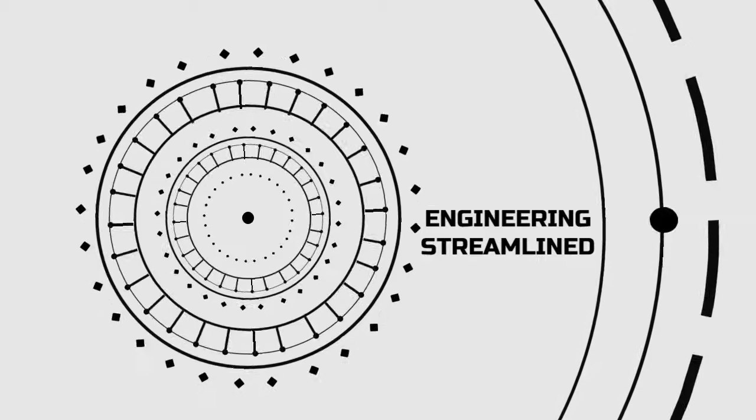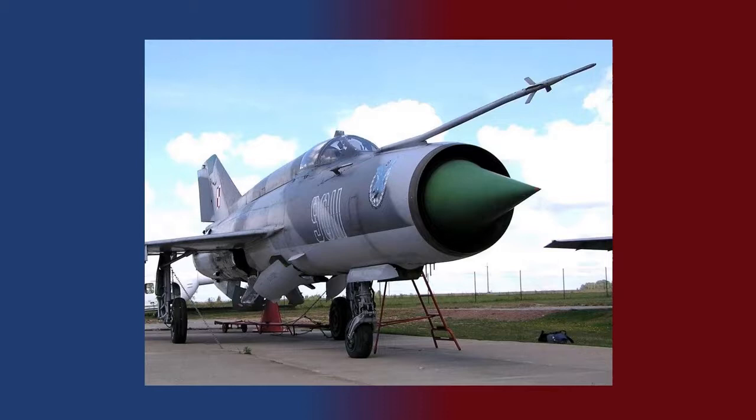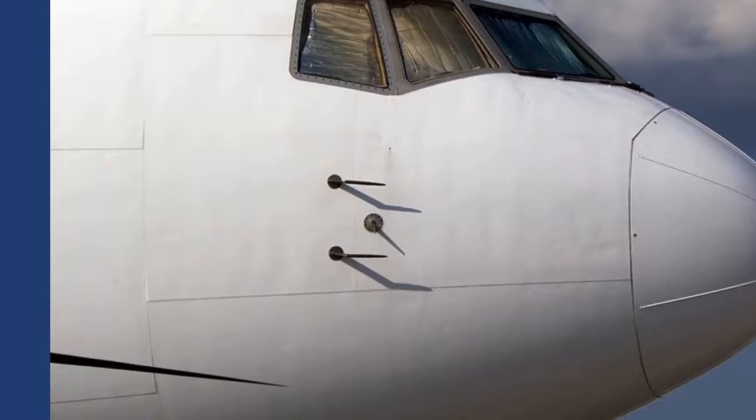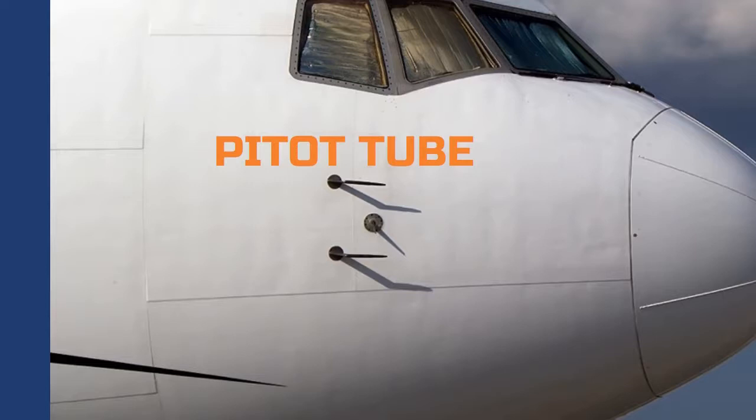Hello friends, welcome to Revenue Stream Line. If you see this fighter aircraft, there is a long pointy tube coming out from the aircraft nose, or in this passenger aircraft you see small objects on the side of the aircraft. This instrument is known as a pitot tube, which is used to measure the air speed. Let's see how it works.